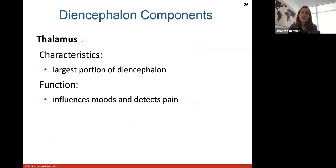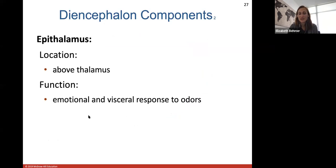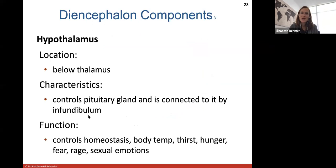The thalamus is the largest part of the diencephalon. The thalamus influences moods and detects pain. The epithalamus is located above the thalamus and helps with emotional and visceral responses to odors. The hypothalamus is located below the thalamus. The big thing about your hypothalamus is that it controls the pituitary gland — it's connected to it by a little stalk called the infundibulum. The hypothalamus is incredibly important because it regulates the hormones from the pituitary gland that control homeostasis, body temperature, thirst, hunger, sexual emotions, fear, and rage.